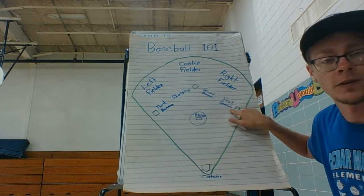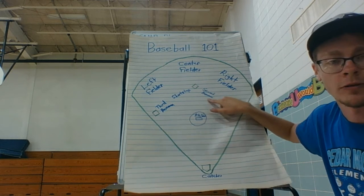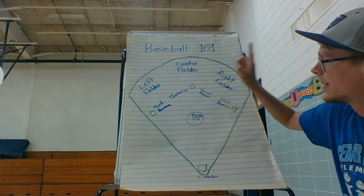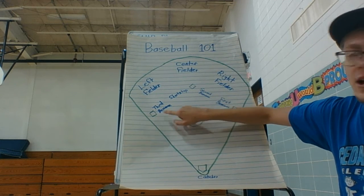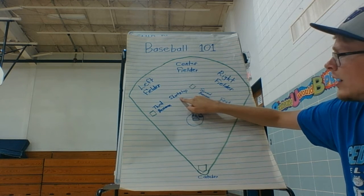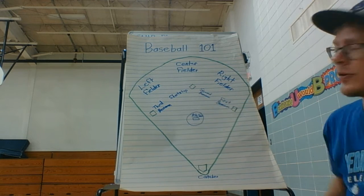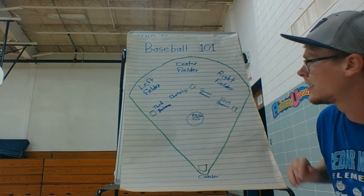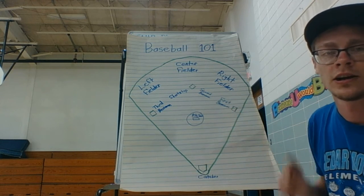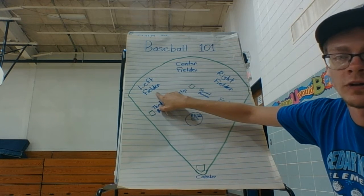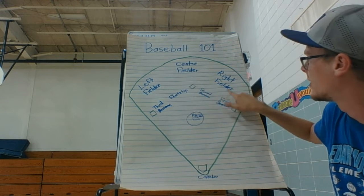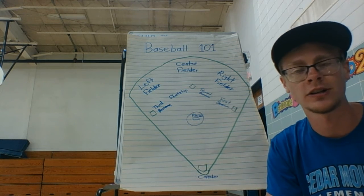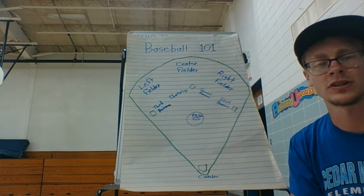Then we have the first baseman and the second baseman over on the right side in between first and second base — they're not standing right on the base, just a couple feet away. The third baseman is standing next to third base. Right next to the third baseman is the shortstop, which is in between second and third base. That's called the infield — all the people playing closest to the plate, typically on the dirt. Then in the outfield, where the grass is, there are three positions: the left fielder, the center fielder, and the right fielder. Those are all nine positions, and their jobs are to catch any pop-ups in the air and throw back to the infield.